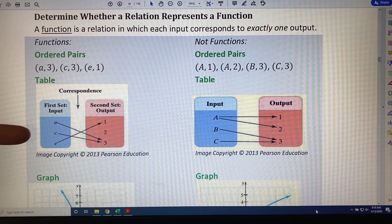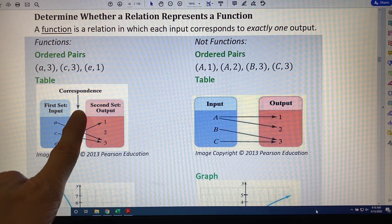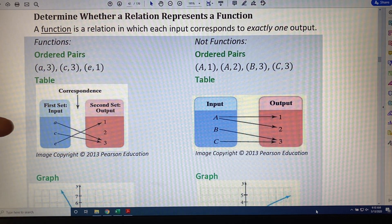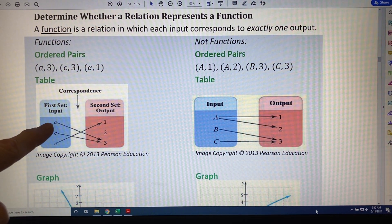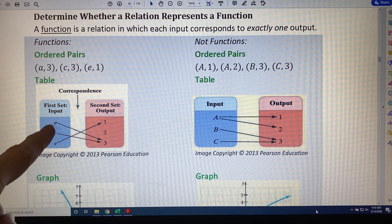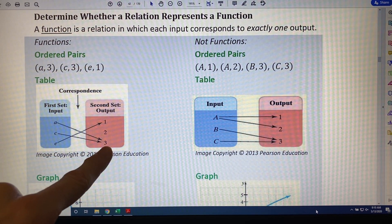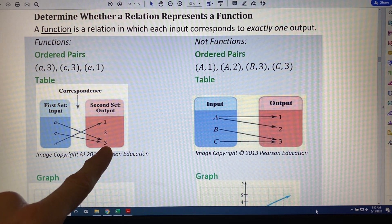But the most important thing to pay attention to in a table is the correspondence, the arrow. For example, a points to 3. That means when the input is a, the output is 3.